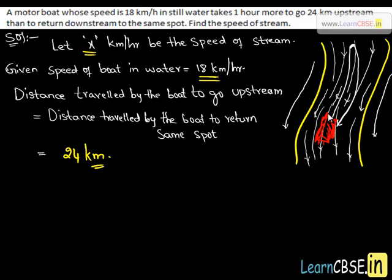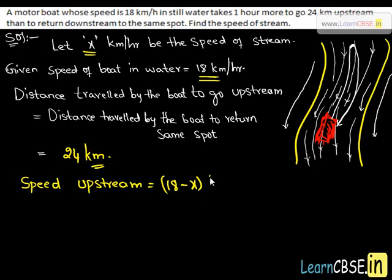Now let us find the speed of the boat when it goes upstream. The speed of the boat upstream is 18 minus x kilometers per hour. It is because when the boat sails upward, its speed is restricted by the flow of the stream, so its speed gets decreased by x. So the actual speed upstream is speed of boat in water minus speed of stream, that is 18 minus x kilometers per hour.